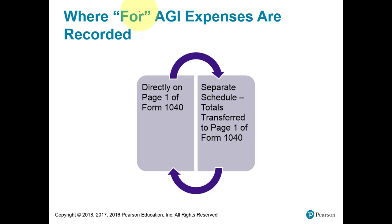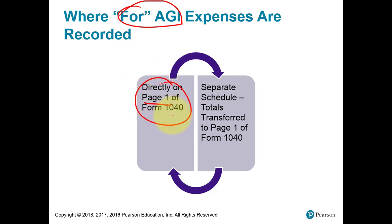The for-AGI deductions can either be reported directly on page 1 of the 1040 or first reported on schedules with the related income, and then the profit on those schedules is rewritten on the 1040 form.